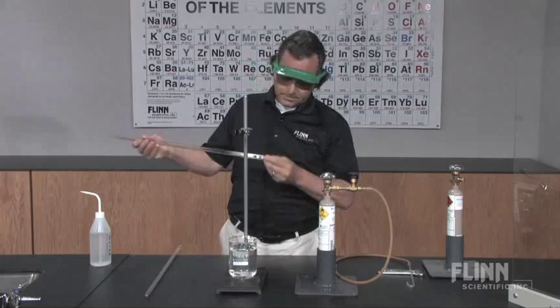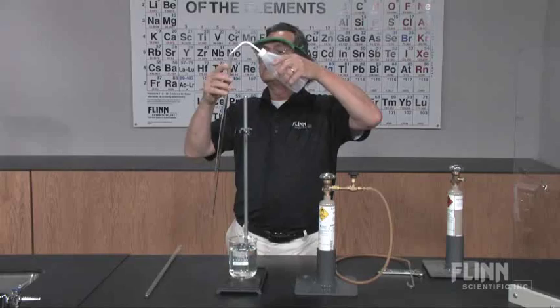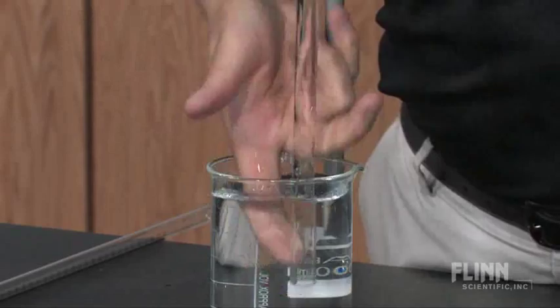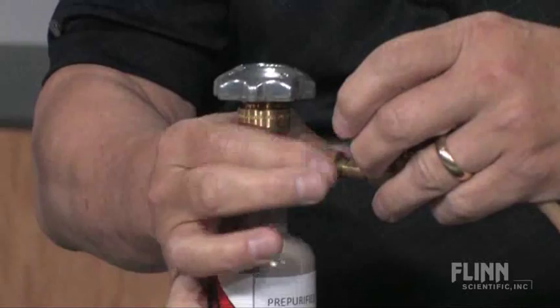First, check the tube for cracks, scratches, or other defects. Then, fill the tube completely with deionized water and place it in a water bath with the tube secured to a stand by a clamp.